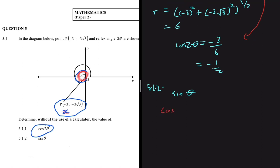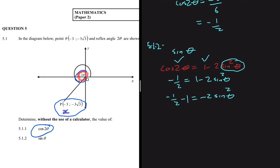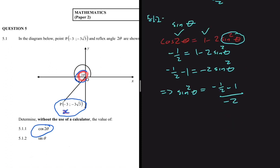We write cos 2θ = 1 − 2 sin²θ. Since we know cos 2θ = −1/2, we substitute: −1/2 = 1 − 2 sin²θ. Solving for sin²θ: −1/2 − 1 = −2 sin²θ, so we divide both sides by −2, giving sin²θ = (−1/2 − 1) / (−2) = 3/4.